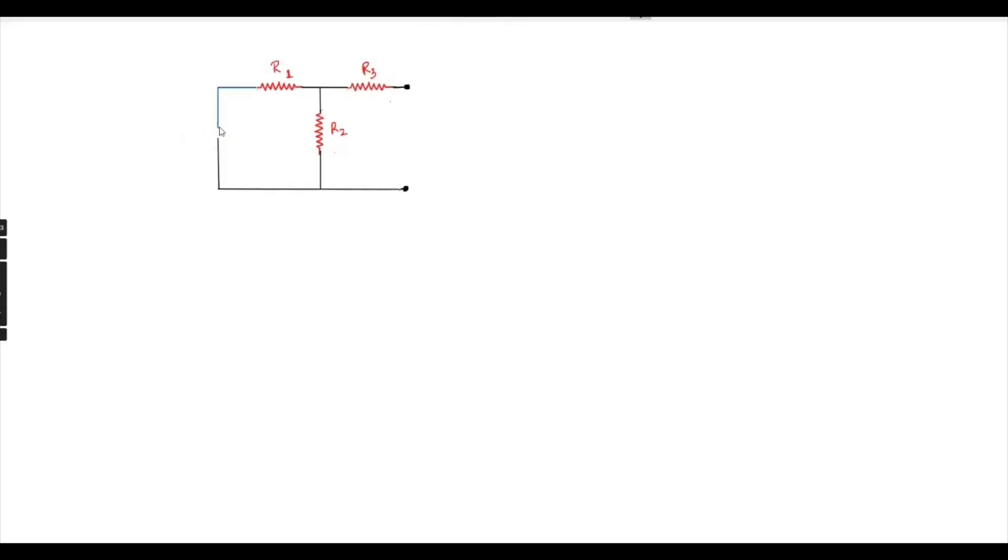When the source has internal resistance R equals to zero, RTH equals R1 parallel with R2, which is R1 times R2 divided by R1 plus R2, plus R3 in series. So RTH equals R1 R2 by R1 plus R2 plus R3. This is the Thevenin resistance.